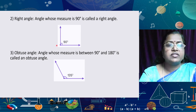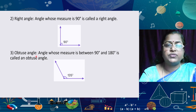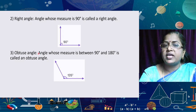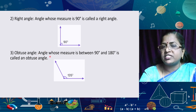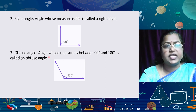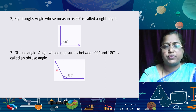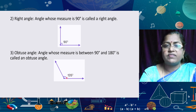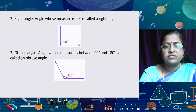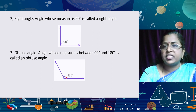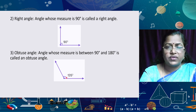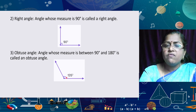The third one is an obtuse angle. An angle whose measure is between 90 degrees and 180 degrees is called an obtuse angle. The 135-degree angle given here is an obtuse angle. There are many other examples: 120°, 145°, 175°.